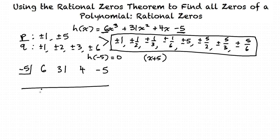We bring our 6 down and multiply it by negative 5 to get negative 30. Then 31 minus 30 equals 1, and we multiply that by negative 5 to get negative 5. Then negative 5 plus 4 is negative 1, which we multiply by negative 5 to get positive 5, and negative 5 plus 5 equals 0, proving that negative 5 was a zero.